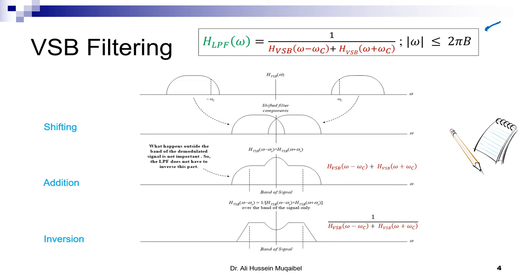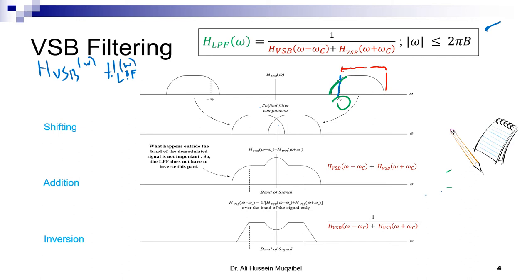This is the expression you need to remember — derived previously. If somebody gives us H_VSB, the vestigial sideband filter, and wants us to design H_LPF as a function of Ω, we use this expression. Here is an example: this filter shown has a carrier frequency; if it were an ideal filter it would take just the upper sideband, but because it is not ideal there is some vestige. This is why we call it vestigial sideband — we are trying to get the upper sideband with some vestige.